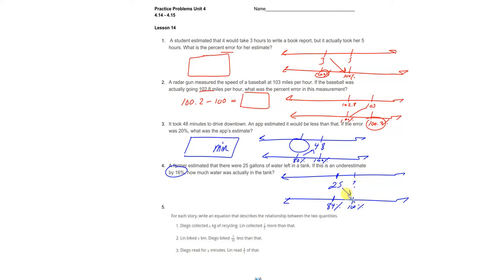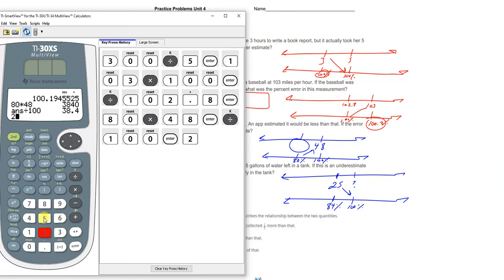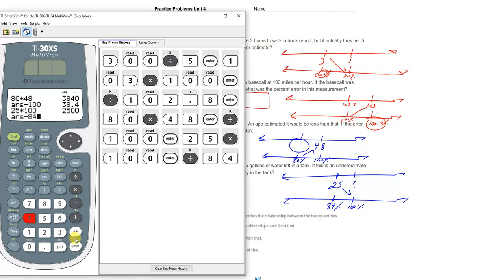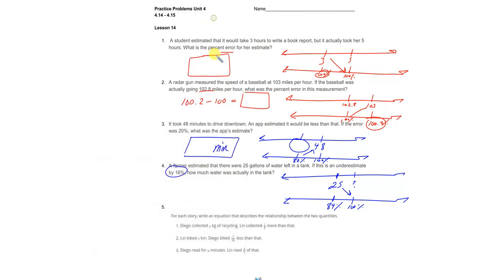So cross multiply 25 times 100 and divide by 84. 25 times 100 and divide by 84, and we get our answer. And that comes out to be about 29.7 gallons.